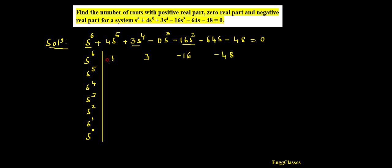Now I write the coefficients of odd powers of s. The first term is 4s^5, so I write 4. Then I have 0s to the power 3, so I write 0. Then I have minus 64s, so I write minus 64. And I fill the remaining position with 0.